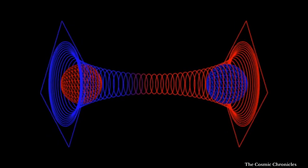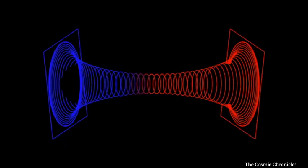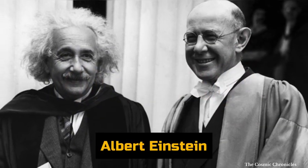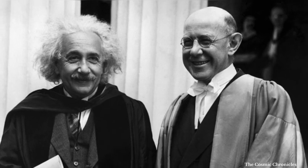An Einstein-Rosen bridge, commonly known as a wormhole, is a theoretical structure that connects two separate points in spacetime. This concept was first proposed by Albert Einstein and Nathan Rosen in 1935 as a solution to the equations of general relativity.